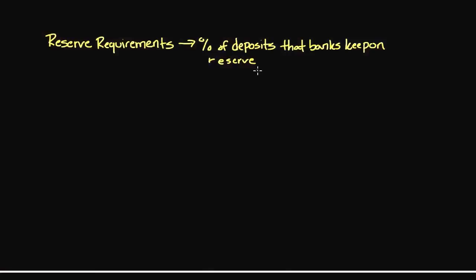Banks obviously don't hold all of our money on hand — that's not how they do business, because they wouldn't be able to earn anything if they were just holding money for us. So what they do is keep the reserves and then loan the rest out at a higher interest rate, typically in the form of car loans, mortgage loans, and credit cards. The Federal Reserve can change this reserve requirement in order to either expand or contract the money supply — the amount of money available in circulation.